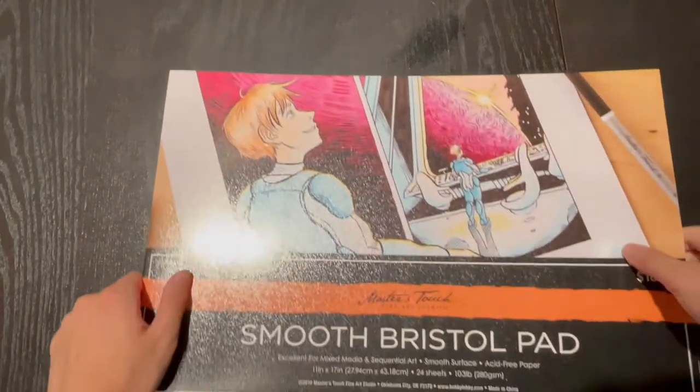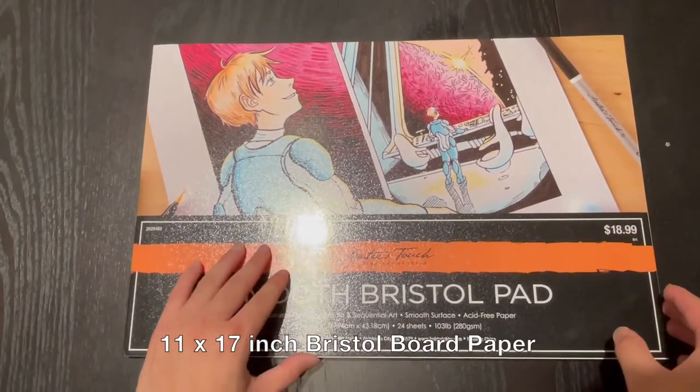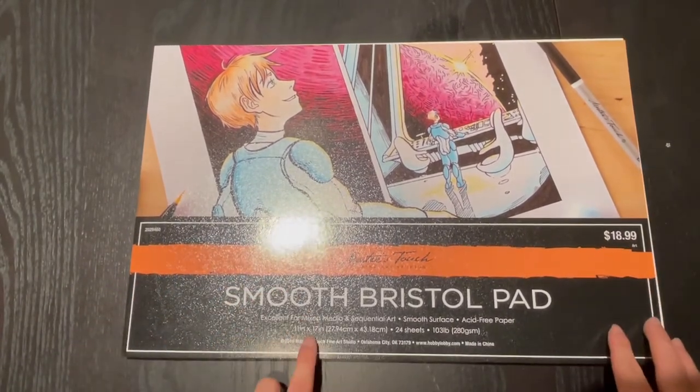For my actual spread paper, I'm using 11 by 17 inch Bristol board paper, another really smooth paper for inking comics.